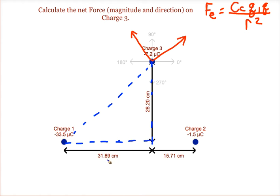So we know the horizontal leg, we know the vertical leg, and we can find the radius between charge 1 and 3. So we make sure we convert that to meters and plug it in as our radius.